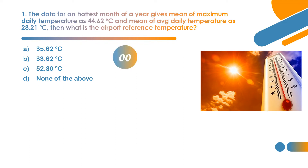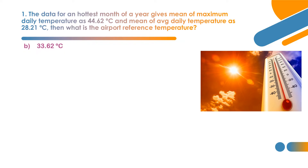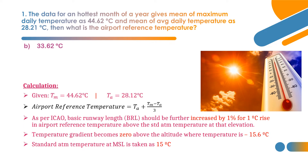There is one simple formula to be followed as per ICAO. The answer is option B: 33.62 degrees Celsius. T_M is the mean of maximum daily temperature — 44.62 degrees Celsius — and T_A is the average daily temperature — 28.21 degrees Celsius. The ICAO formula is: ART = T_A + (T_M − T_A) / 3. Substituting gives ART = 33.62 degrees Celsius. This is the important formula to find ART, the airport reference temperature.